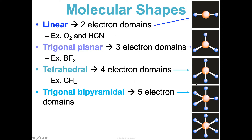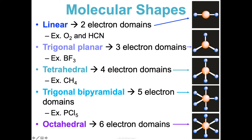Five electron domains gives trigonal bipyramidal, like phosphorus pentachloride. Octahedral has six electron domains, like sulfur hexafluoride. You might wonder how there can be six — if each electron domain represents at minimum two valence electrons being shared, the central atom in the octahedral case has 12 electrons shared with it. Most molecules follow the octet rule, but not all. Phosphorus and sulfur are examples where the central atom has access to far more electrons than the octet requires, but these compounds can still exist.